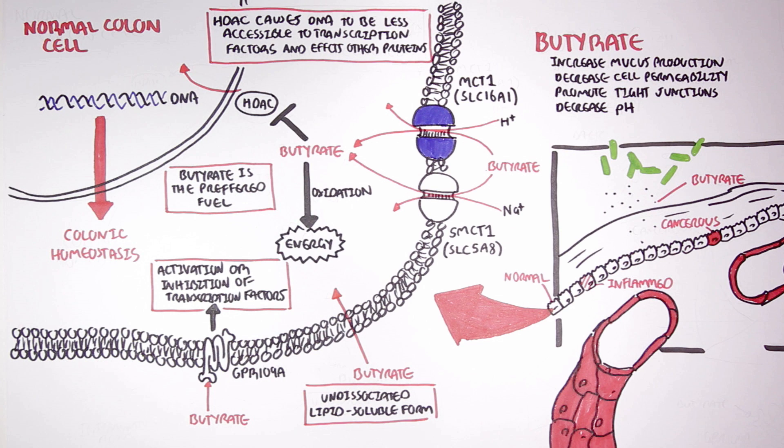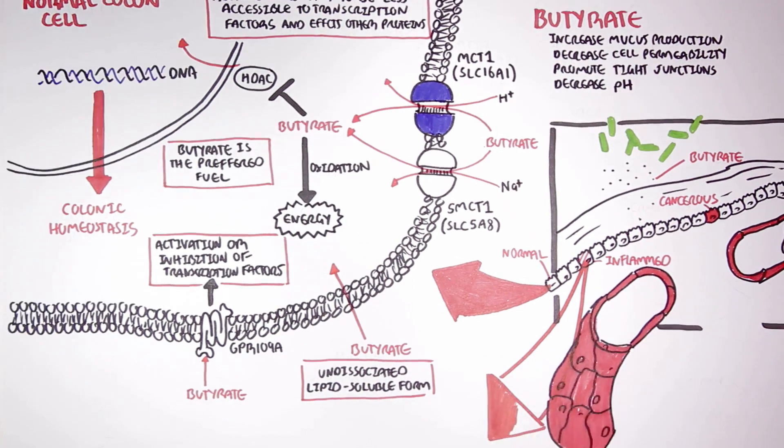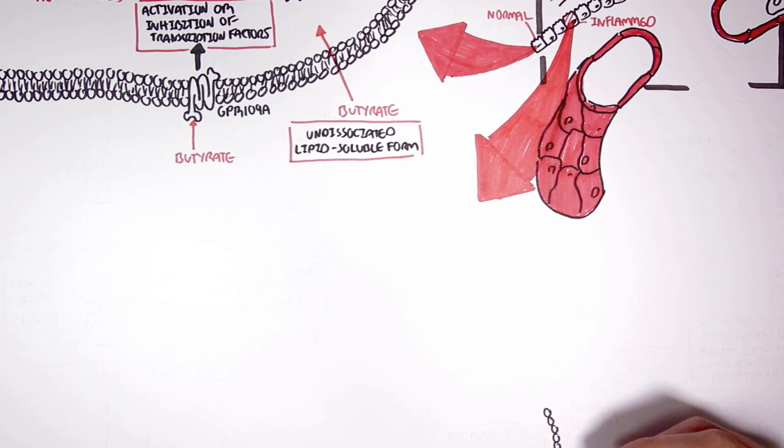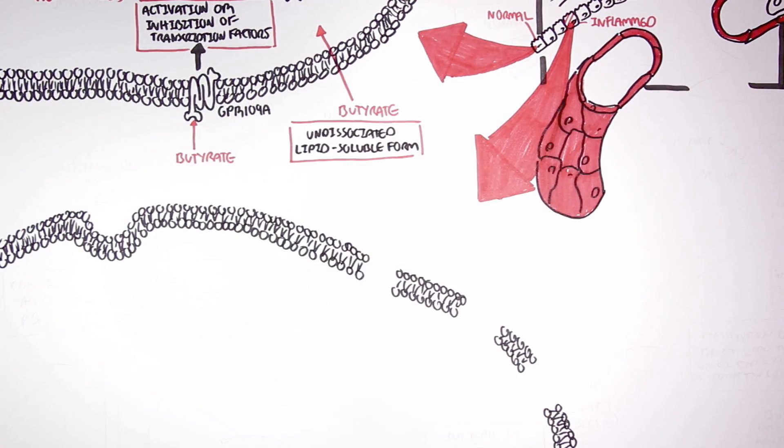Now apart from helping in maintaining homeostasis in the colon, butyrate can exert direct anti-inflammatory effects. The colon cells are permanently in close association with trillions of microbes and their products. Therefore, the colon cells must have some form of response to this potential challenge, and this is inflammation. So here we have an inflamed colon cell.